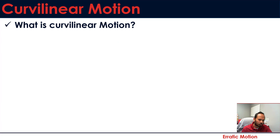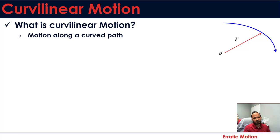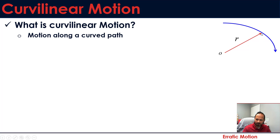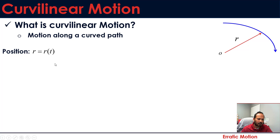So what is curvilinear motion? It is the motion along a curved path — motion that is not along a straight line but a curved path. If you see the image on the right, a particle moving along this curved path can have its position at any instant represented by a position vector r.